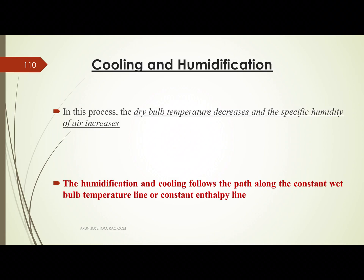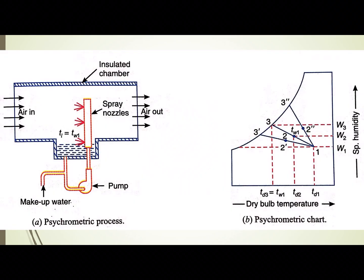How does this process appear on the psychrometric chart? We are looking at the right side of the psychrometric chart. We look at the initial condition, then the final condition. The conditions are labeled as 2, 2-dash, and 2-double-dash. This represents the cooling and humidification process.